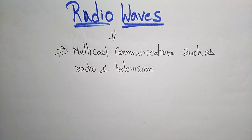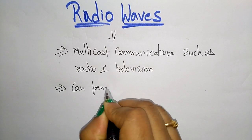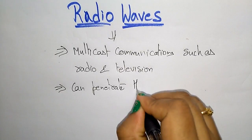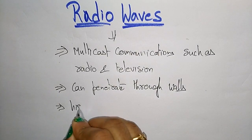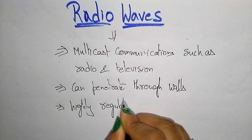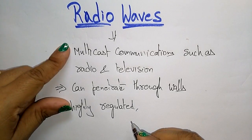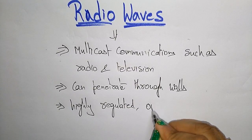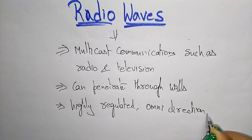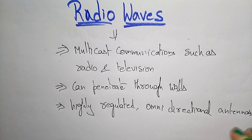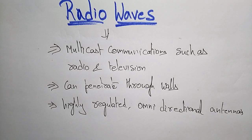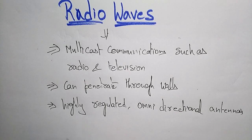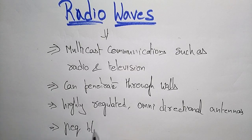Radio waves can penetrate through walls. This medium is highly regulated. Radio waves use omnidirectional antennas — the signal spreads out in all directions, so wherever the tower or antenna is located, the signals spread out and can be received by many antennas.